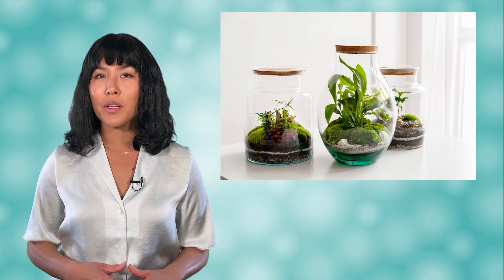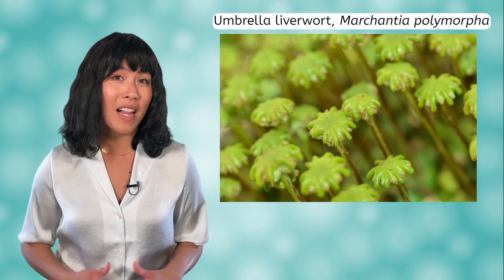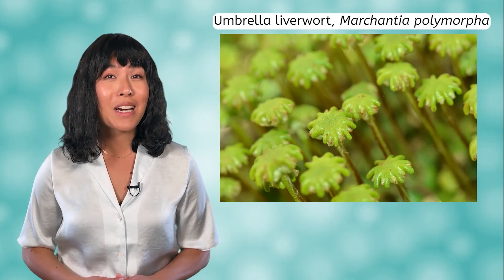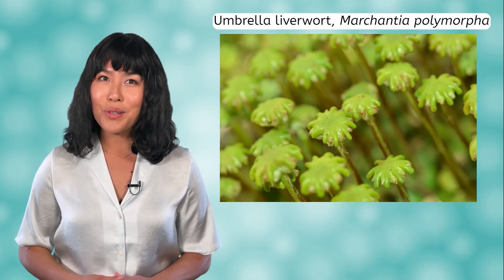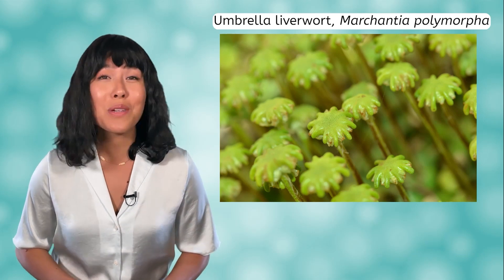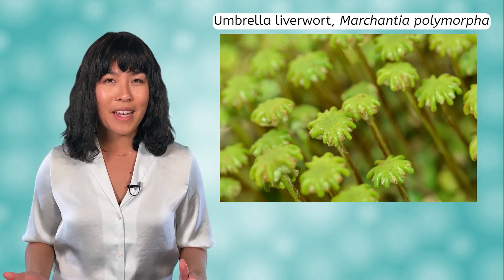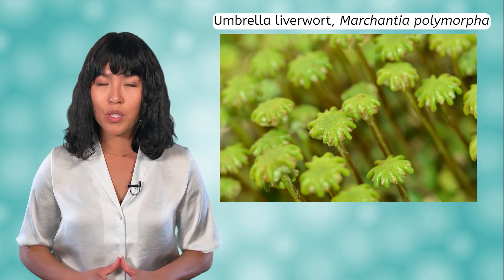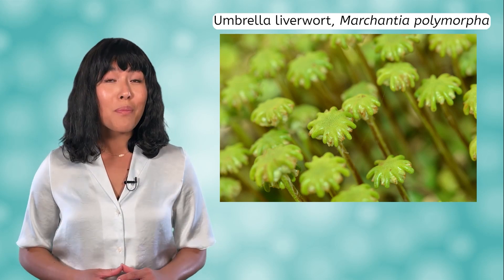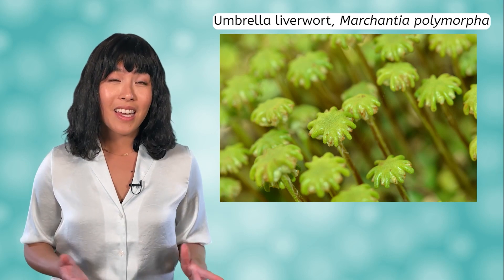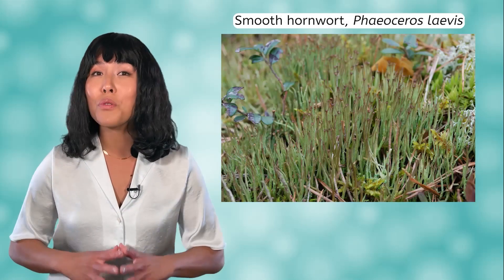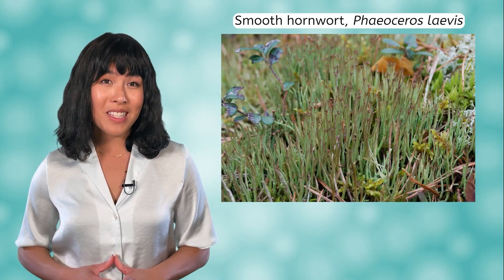You may be less familiar with plants in the liverwort class, such as the umbrella liverwort, Marchantia polymorpha. They do look like tiny umbrellas and can be found almost anywhere that has damp soil. But be careful if you see one in the wild — they are poisonous if eaten or even applied to the skin. In the hornwort class, you would find plants such as the smooth hornwort, Phaeoceros laevis.